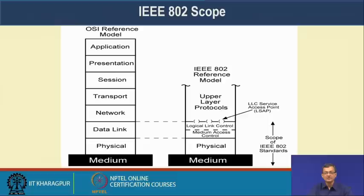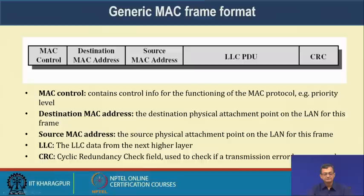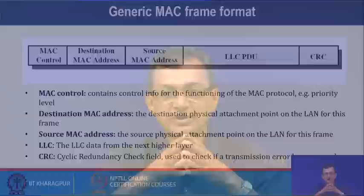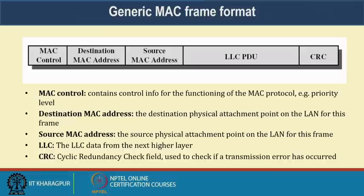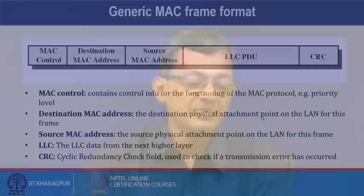If you look at the IEEE 802 standard, it encompasses both the data link layer and the physical layer. Looking at the generic MAC frame format, the MAC layer forms a frame. The MAC frame's payload is the PDU it receives from LLC. It has a source MAC address, a destination MAC address, MAC control fields, and at the end a CRC or cyclic redundancy check field to determine whether a transmission error has occurred.